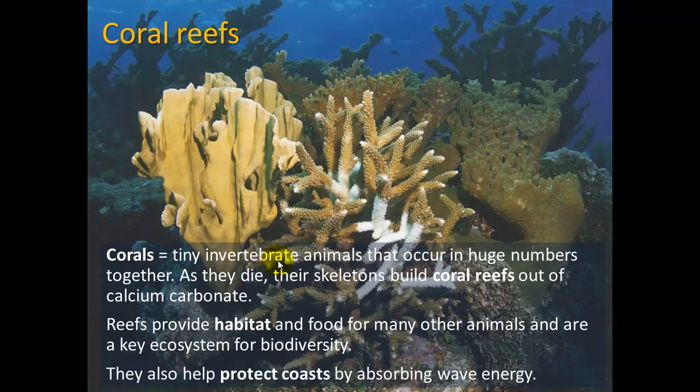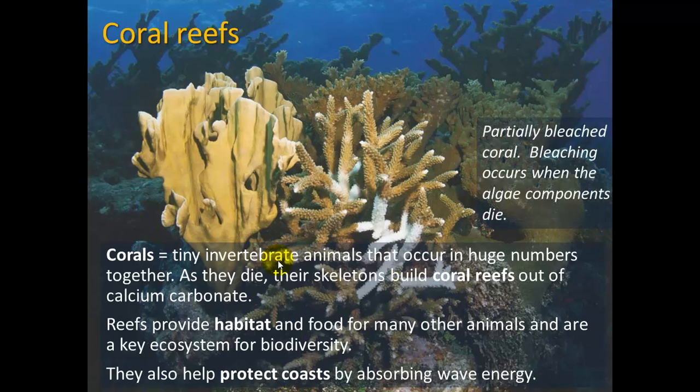Coral reefs also help protect coasts by absorbing wave energy. Coral bleaching occurs when the algae components die — the really colorful appearance of coral comes from different colored algae living in a symbiotic relationship with the coral polyps. Those polyps are the invertebrate animals that form the reef structure.